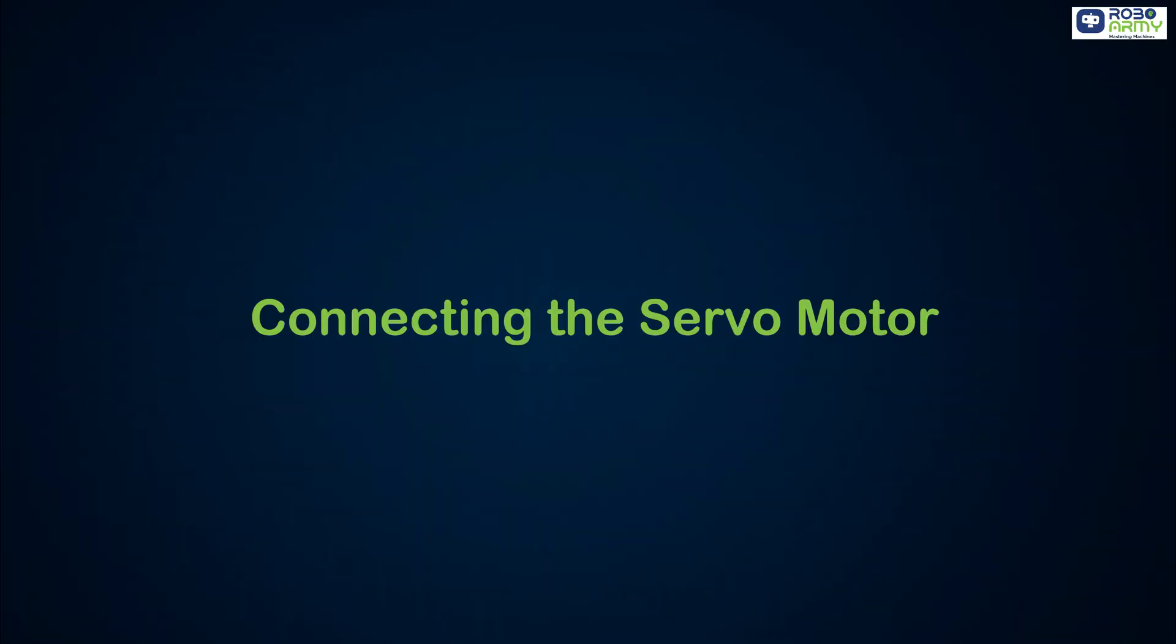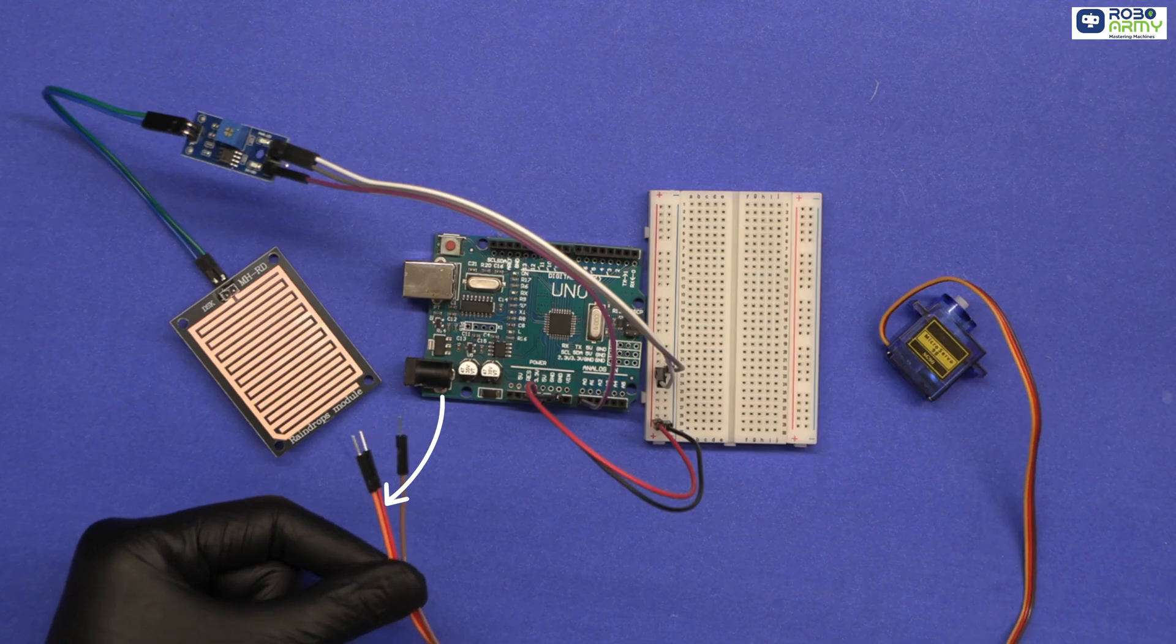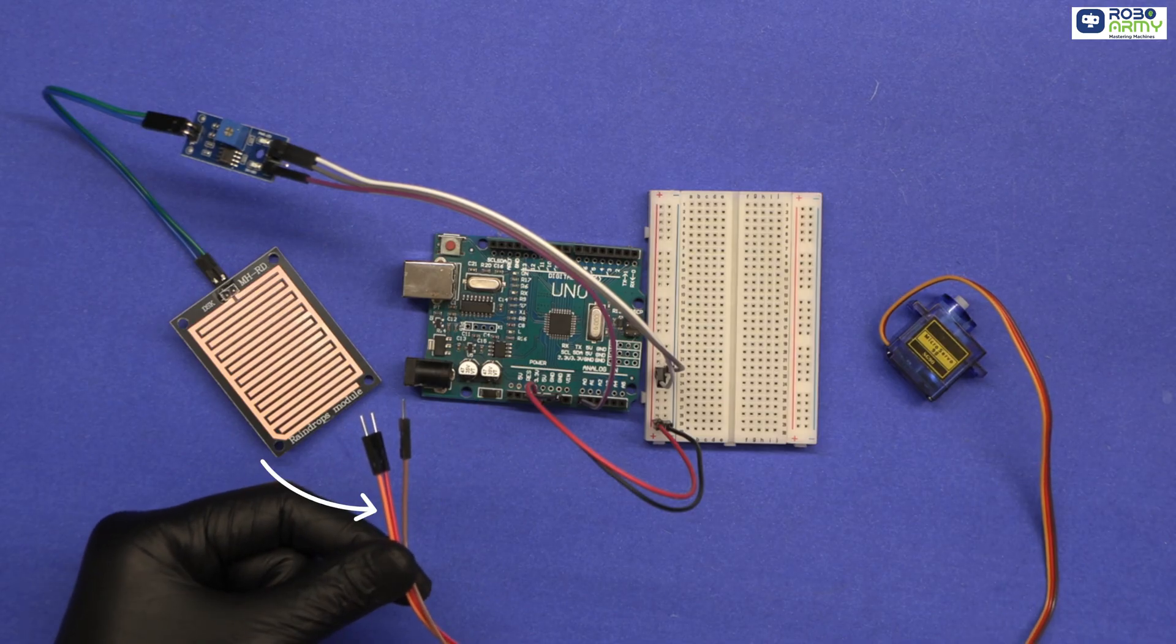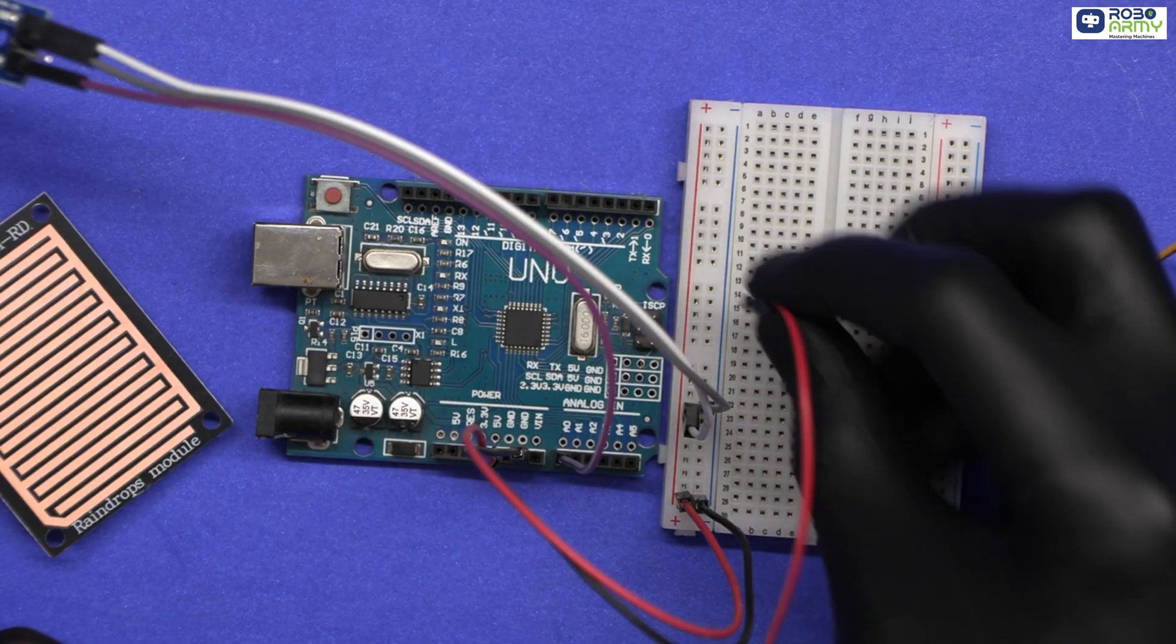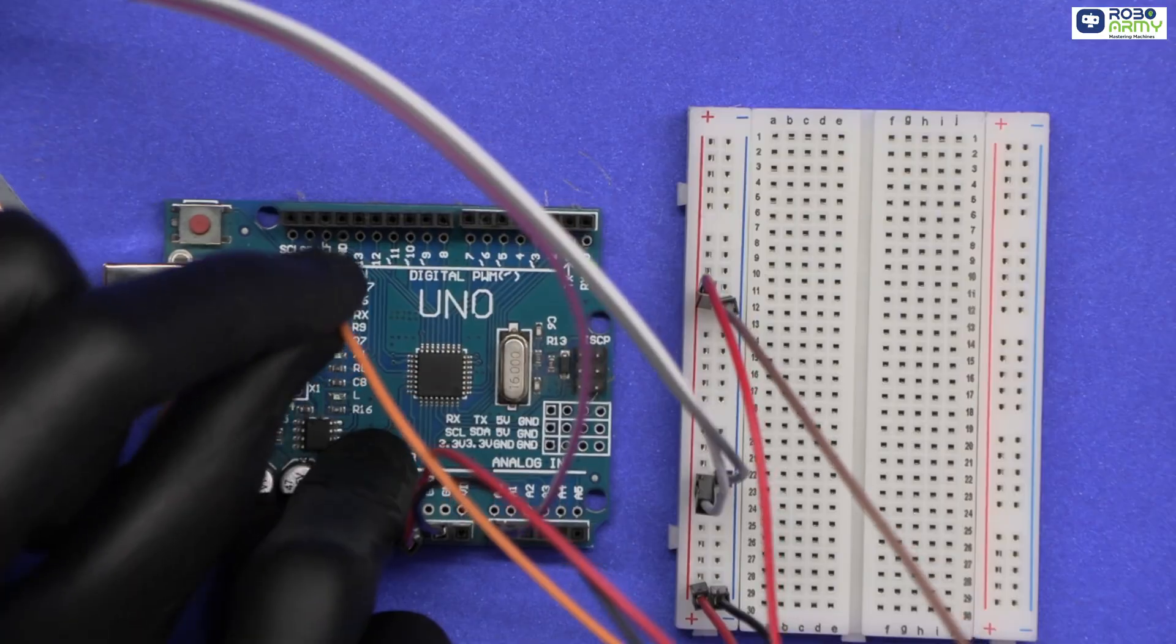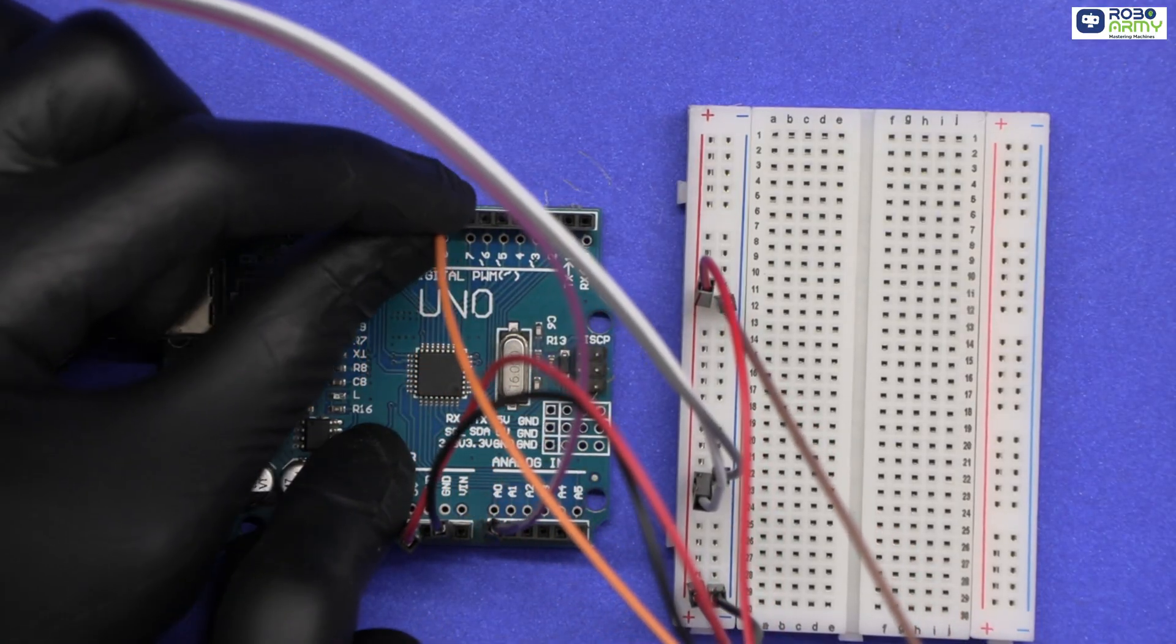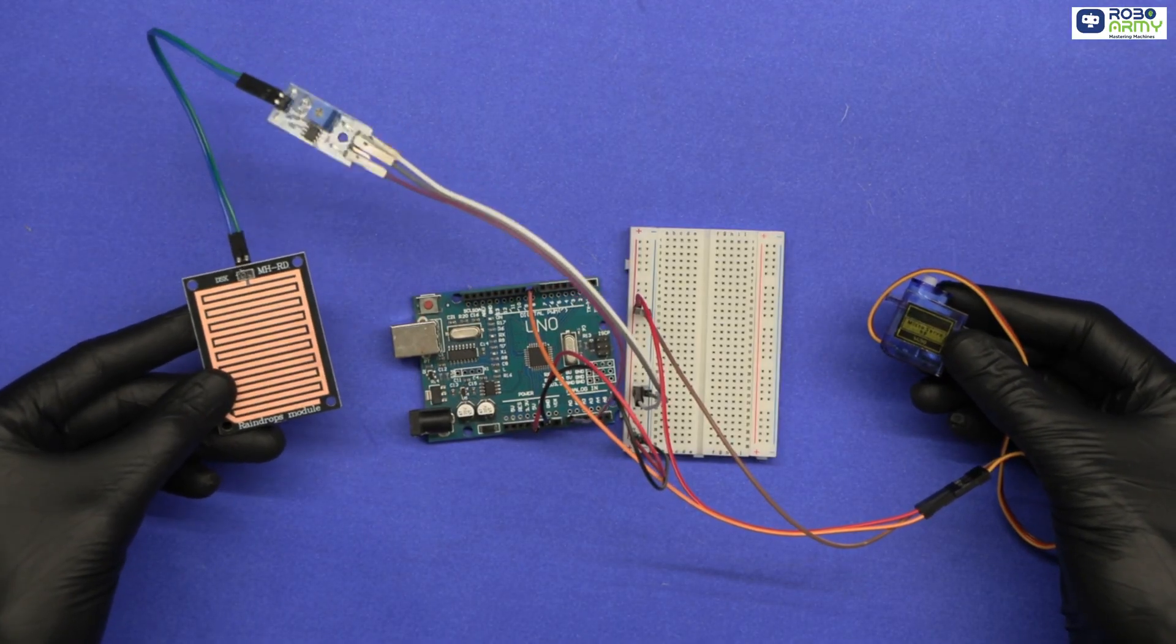Step 3: Connecting the servo motor. The servo motor has 3 wires: brown for GND, red for VCC, and orange for signal. Make the connection using the breadboard. Connect red VCC wire to the positive rail of the breadboard. Connect brown GND wire to the negative rail of the breadboard. Connect orange signal wire to digital pin 8 on Arduino. Now both the rain sensor and servo are powered from the breadboard, neat and easy.